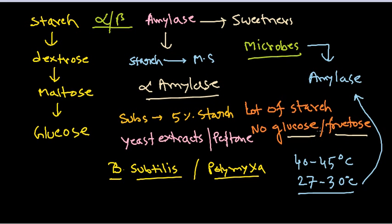pH is also very important to maintain throughout the process. The pH is kept at 6.8 — very slightly acidic, close to neutral — and at this pH the organism generates amylase for us.